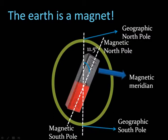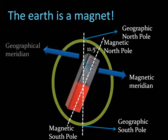As you can see, the line joining the north pole and the south pole is the geographic meridian, and the line joining the magnetic north pole and the magnetic south pole is the magnetic meridian. So basically, the earth can actually be replaced by a bar magnet such that its north pole is at an angle 11.5 degrees with the geographic north pole.